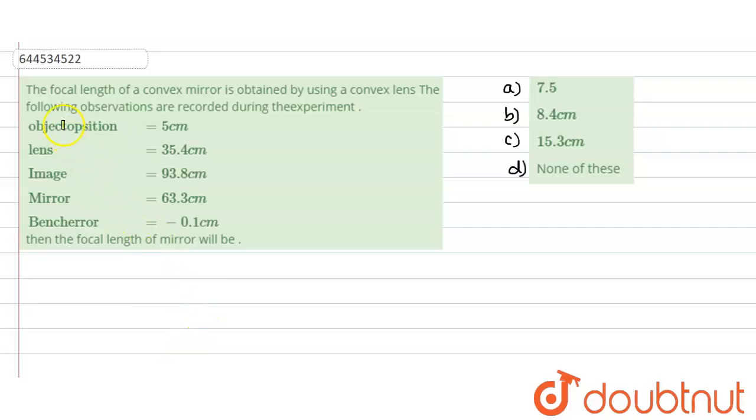Hello everyone, let us start with our question. In this question, it is given that the focal length of a convex mirror is obtained by using a convex lens. The following observations were recorded during the experiment.